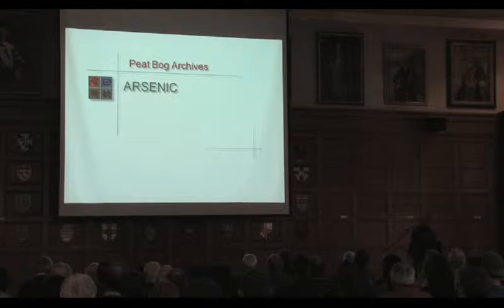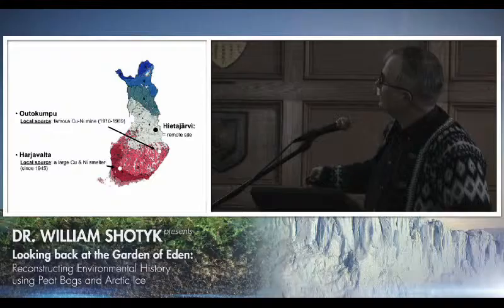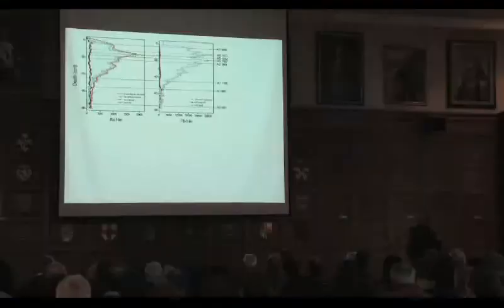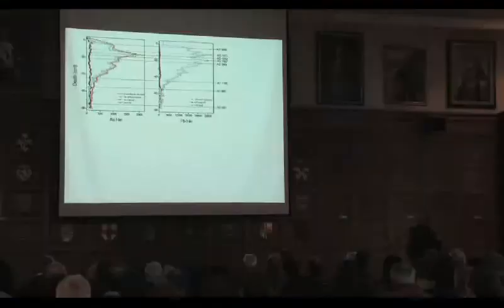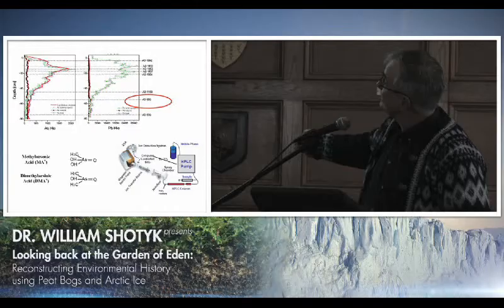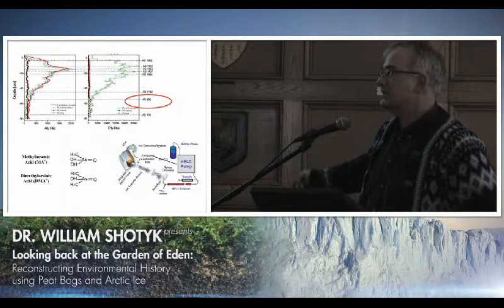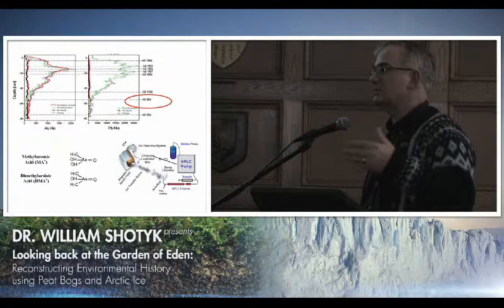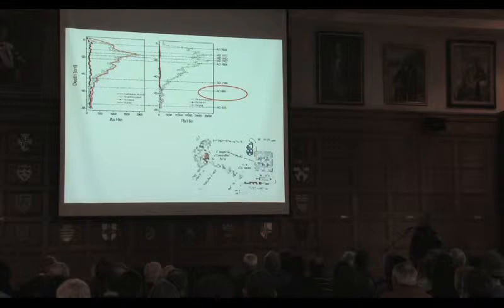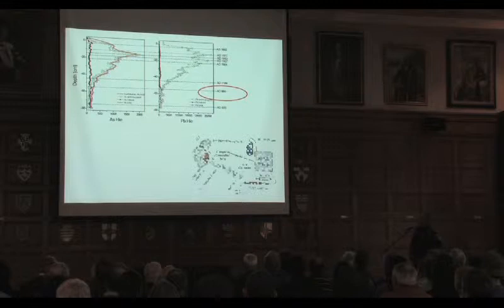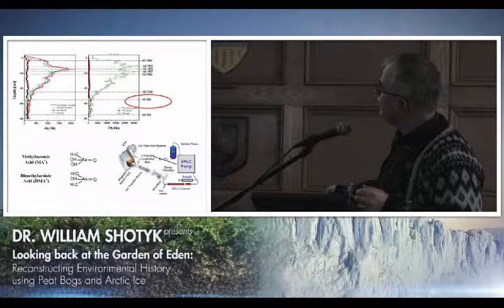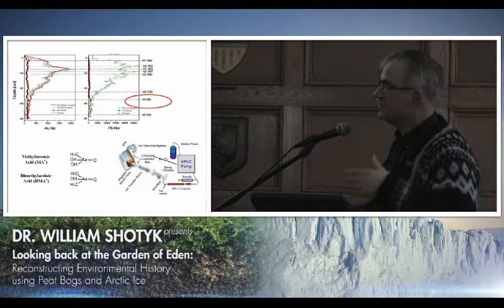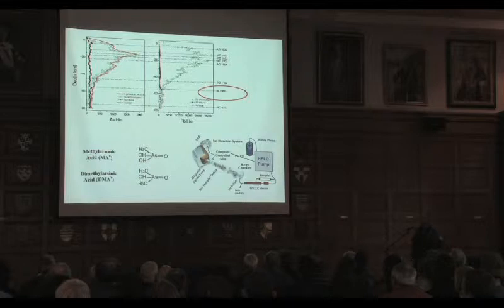Arsenic is a fascinating element. We looked at three sites in Finland: a background site, a copper mine, and a copper-nickel smelter. We see an increase in arsenic concentration at the background site about a thousand years ago — when lead began to increase in the atmosphere, so too did arsenic — probably from lead mining in Germany during the medieval period. The analytical chemistry of arsenic is far more complicated: it's important to determine the abundance of individual species. We connect an HPLC to the ICP-MS to do arsenic speciation. These organic forms identified in the peat are much less toxic than the inorganic forms.